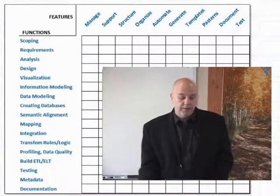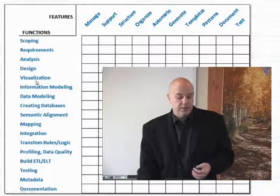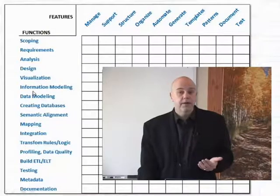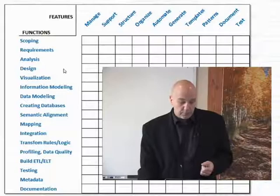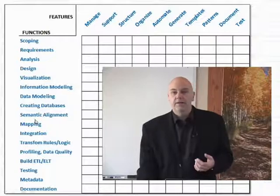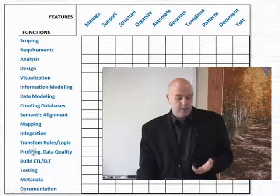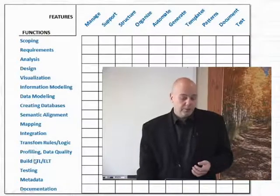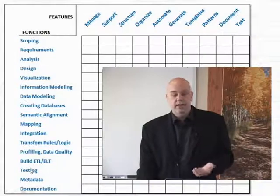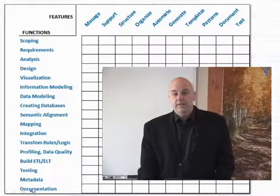Looking down the side of the matrix, we have: scoping requirements, analysis, design, visualization of any part of the process, information modeling, reference models, taxonomies, data modeling, creating the databases themselves, semantic alignment, mappings, integration work, transform rules and logic, profiling and data quality help, building the ETL and ELT, automation and templates for testing, and metadata and documentation.